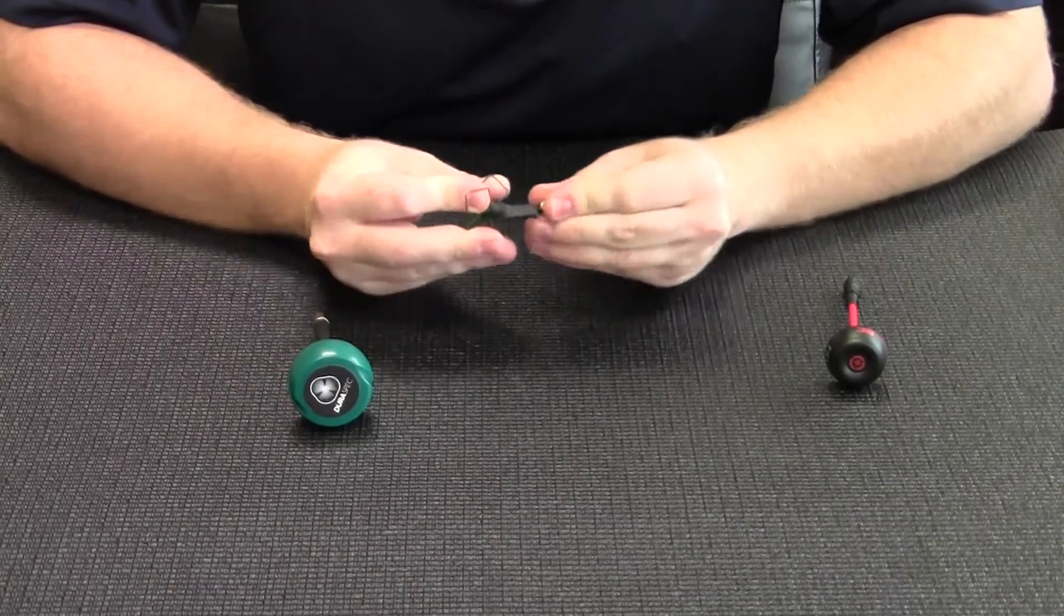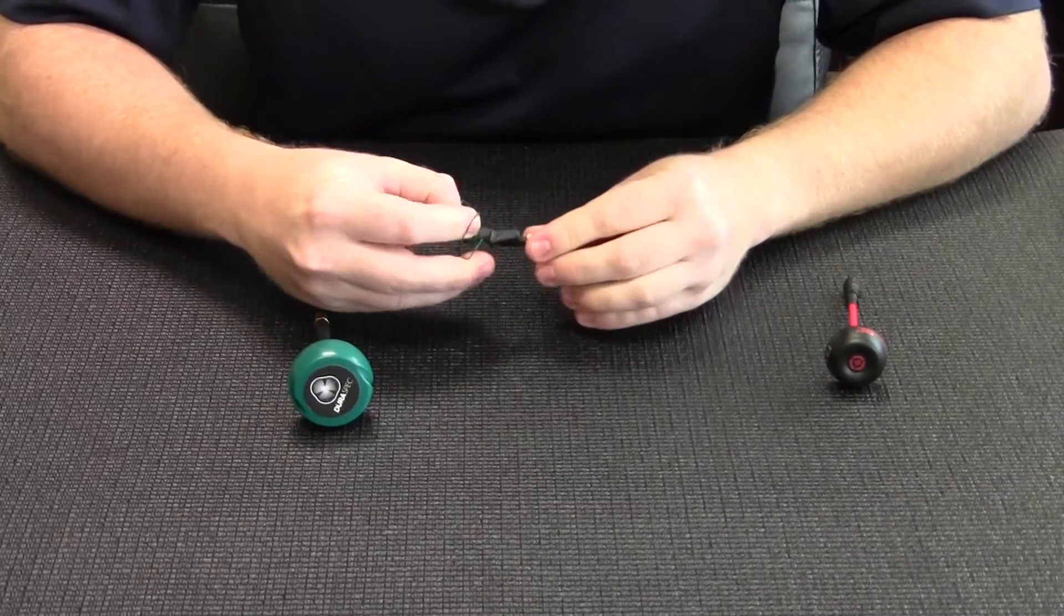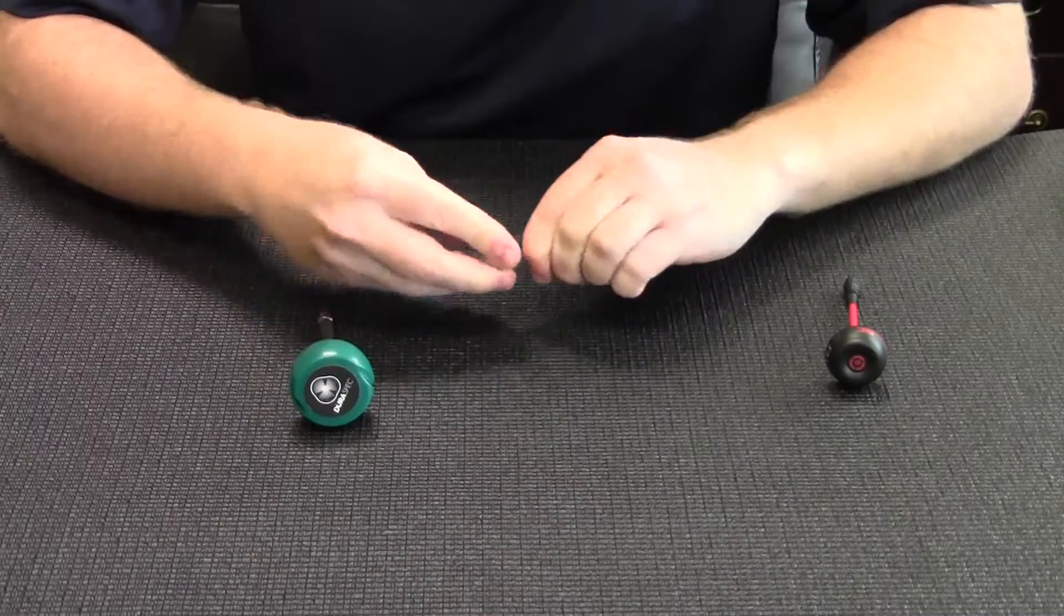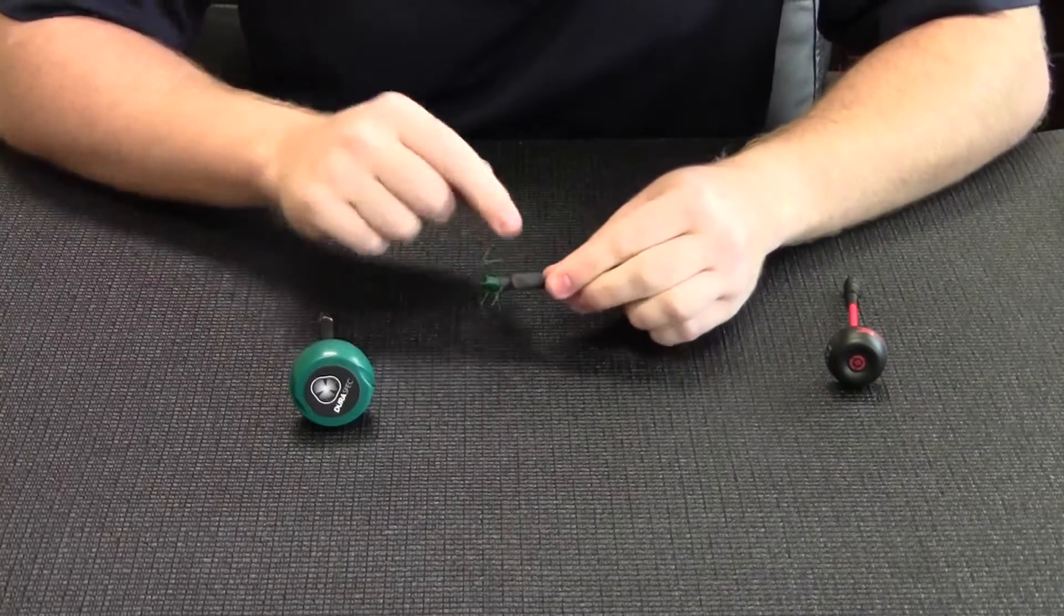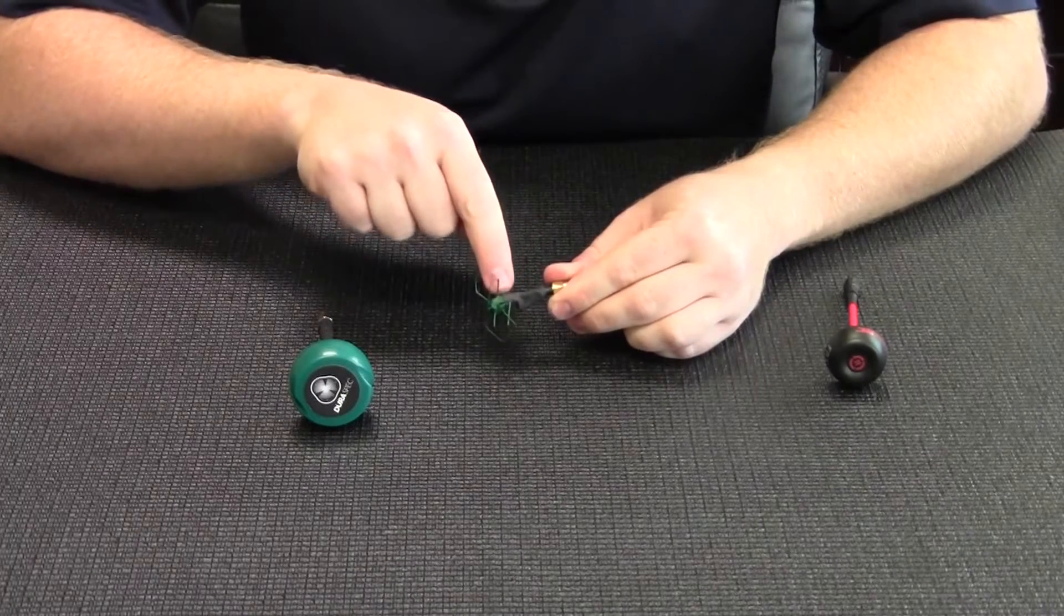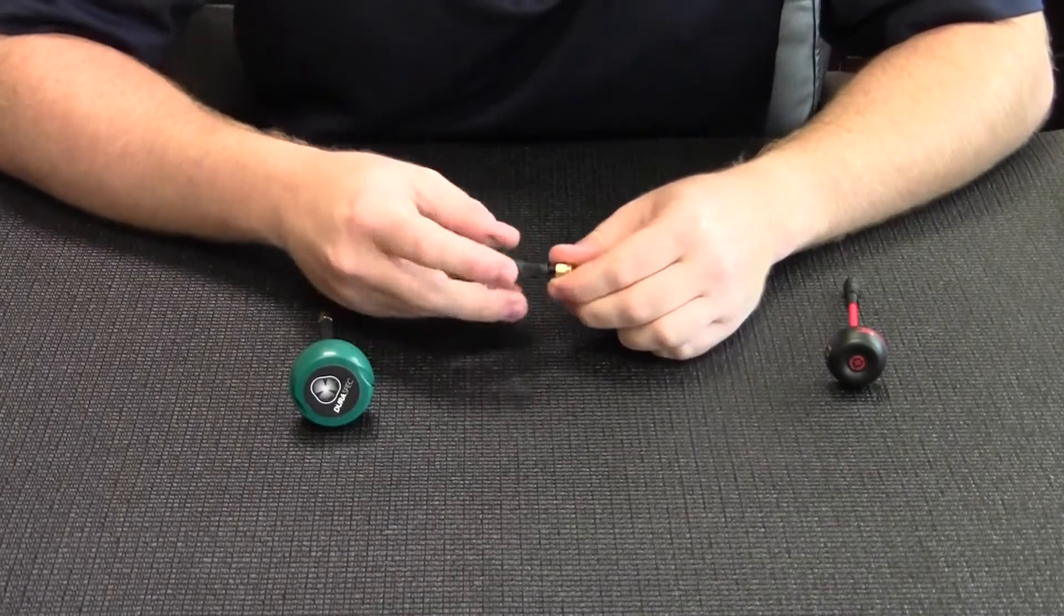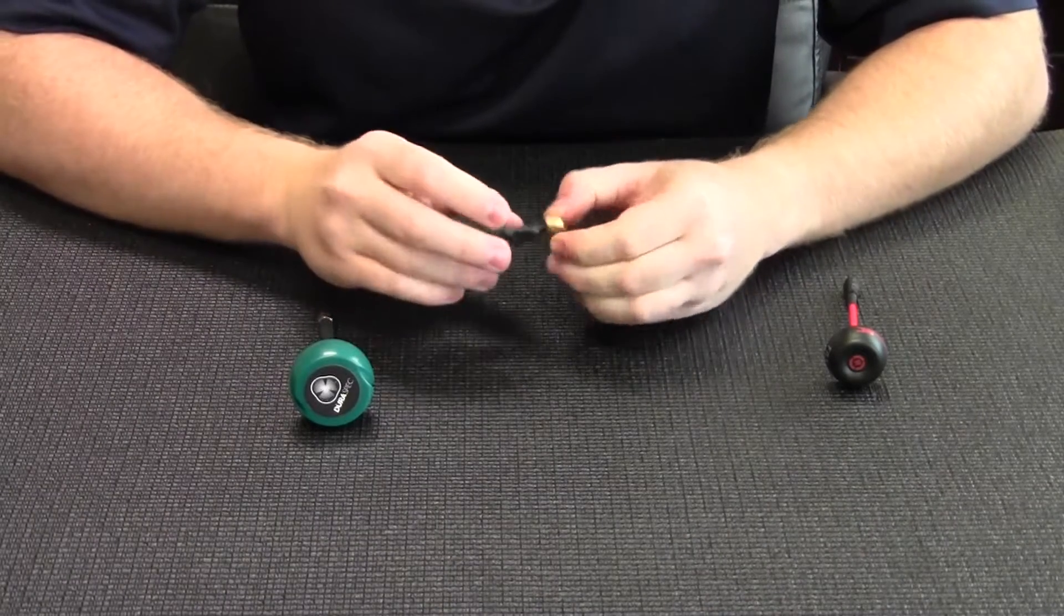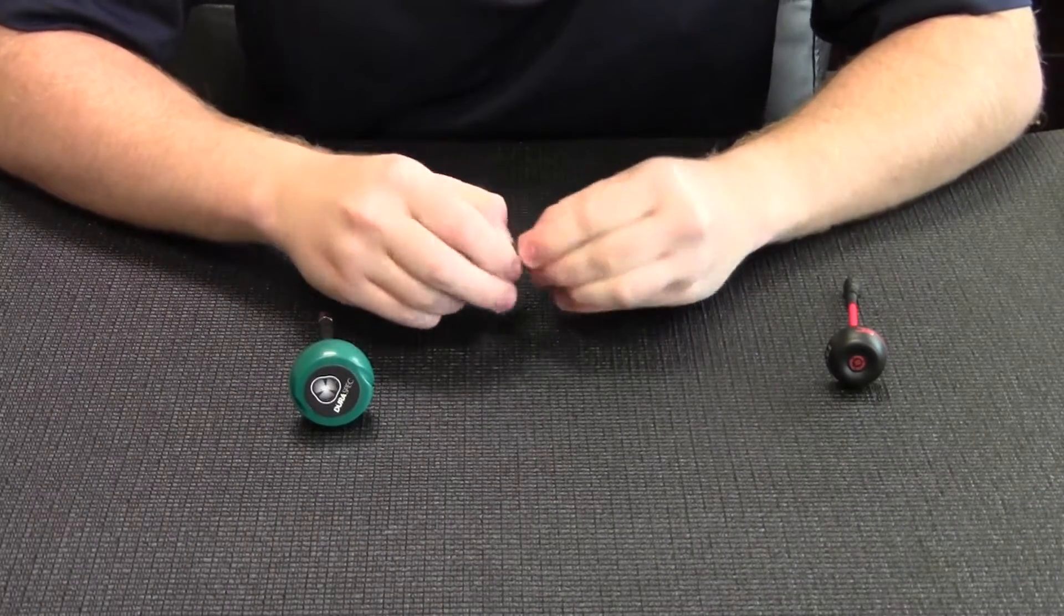The same thing goes for the cord going down to your SMA connector here. This is extremely flexible and under this heat shrink the cable actually goes up and back down and back up to the stem of the lobes. So if it ever bends over, all you have to do is bend it back, throw a little heat on it, and it'll be nice and secure again.